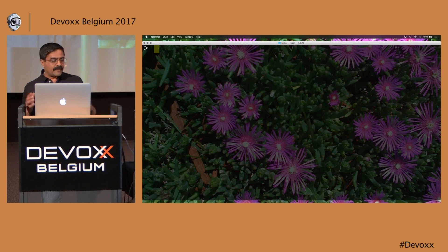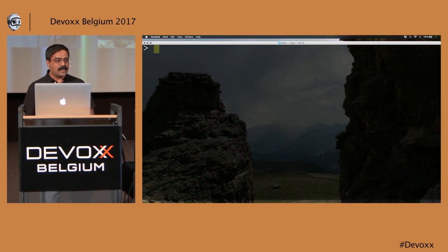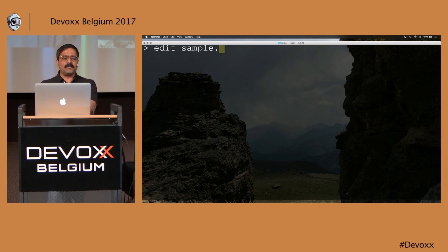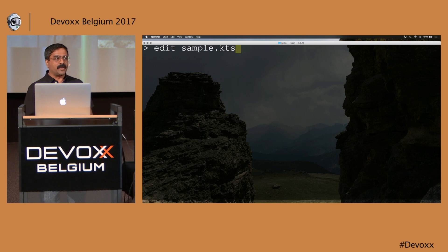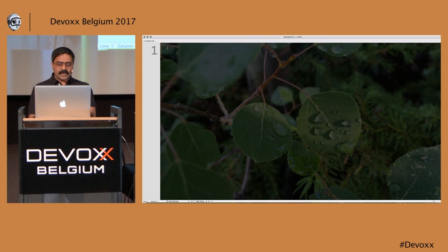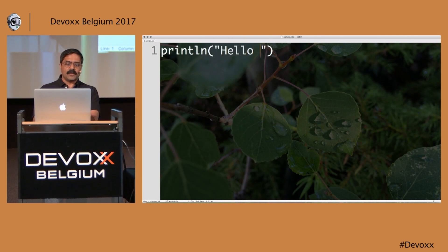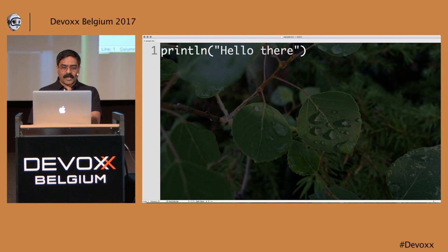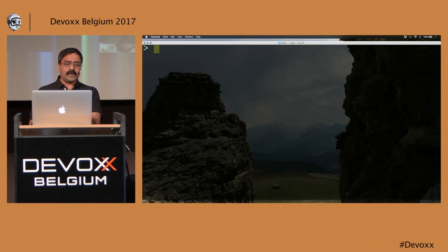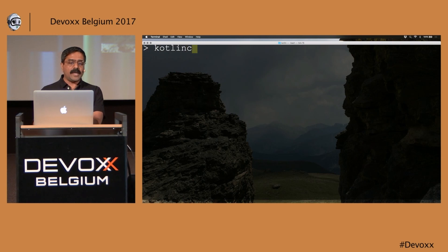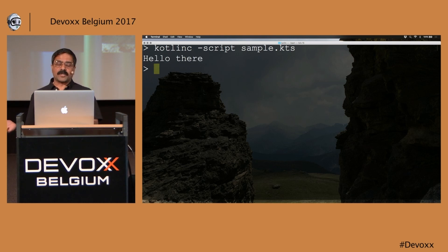But I'm a person of low ceremony. I want to do the minimum I can and start interacting with the language. So I'm a big fan of writing scripts. I'm going to create a file called sample.kts — where the 's' stands for script, not a full-blown class. I can just go ahead and type the code, say 'hello there', and run it. I'll say kotlinc -script and provide the script file so we can directly run it as a script without compiling.